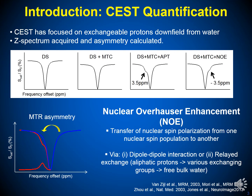The NOE effect is the transfer of nuclear spin polarization from one nuclear spin population to another. It has been used to measure intra- or intermolecular distances, in particular in protein complexes. There are two different ways NOE can be transferred to water: one is through dipole-dipole interactions, and another has been described through relayed exchange mechanisms.